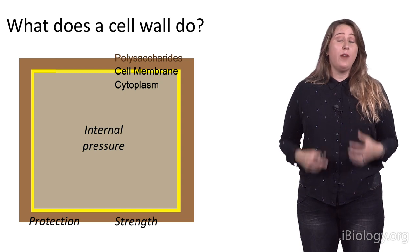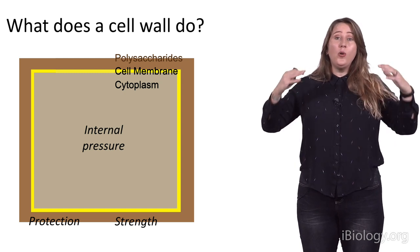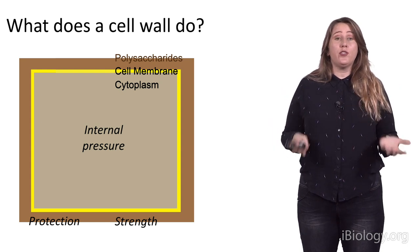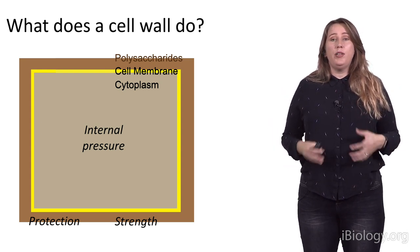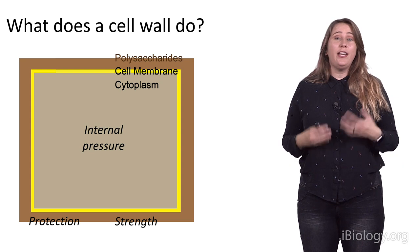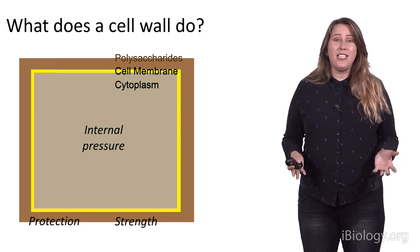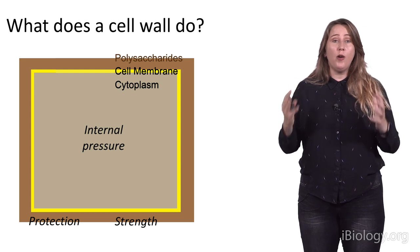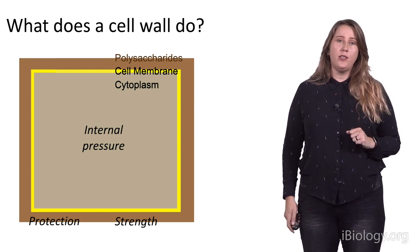In addition, they provide strength. So, while they're holding in that turgor pressure, they're also then providing a lot of structural stability to a plant. Plants do not have, nor any other walled organism, a skeleton, like we do. Instead, their structure comes from this combination of the cell wall material and the pressure inside those cells.